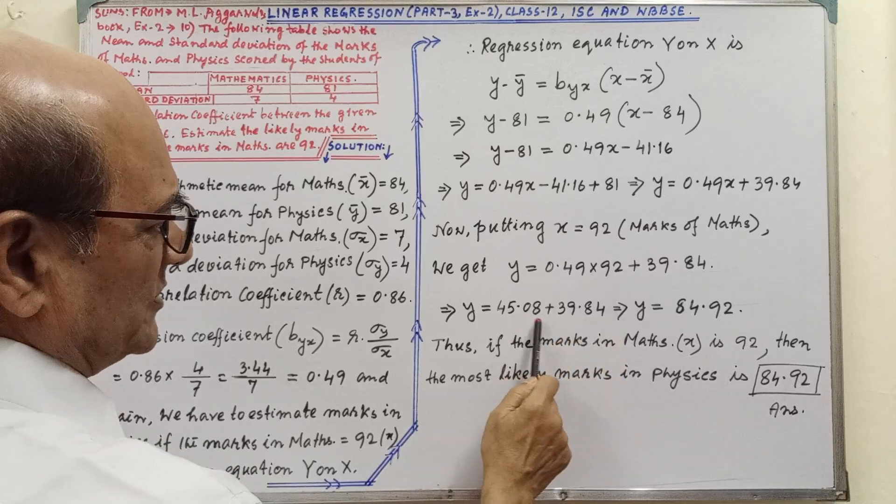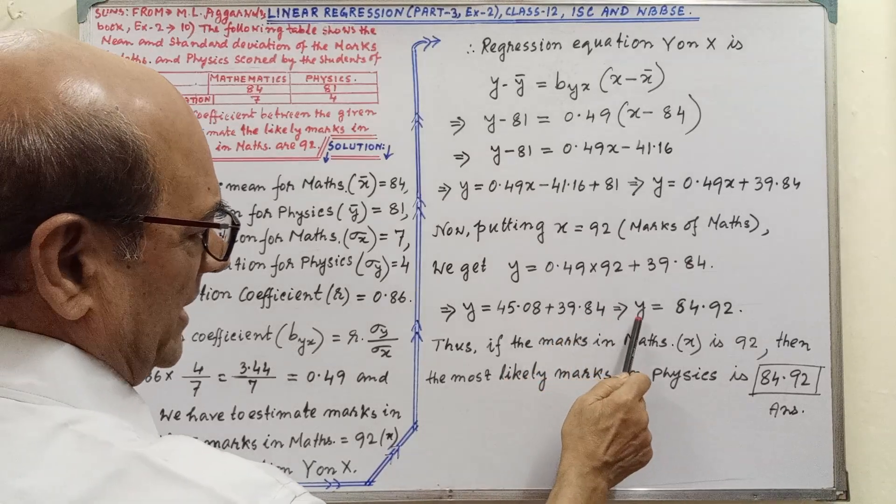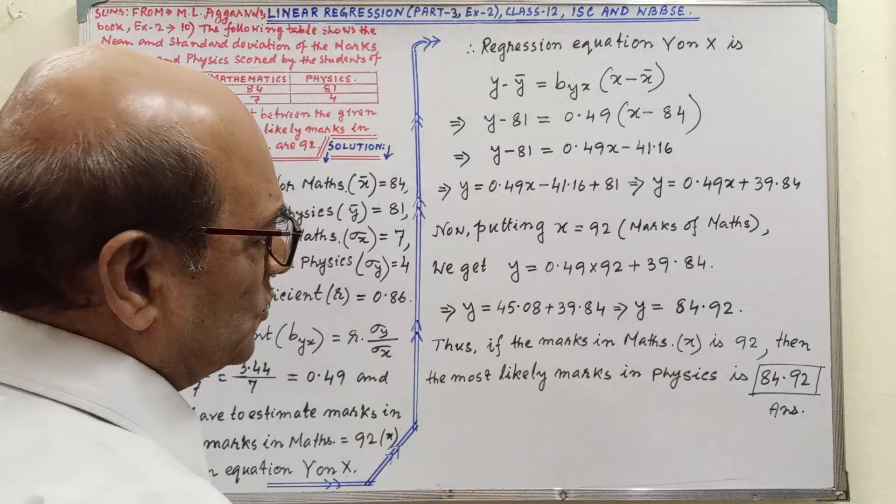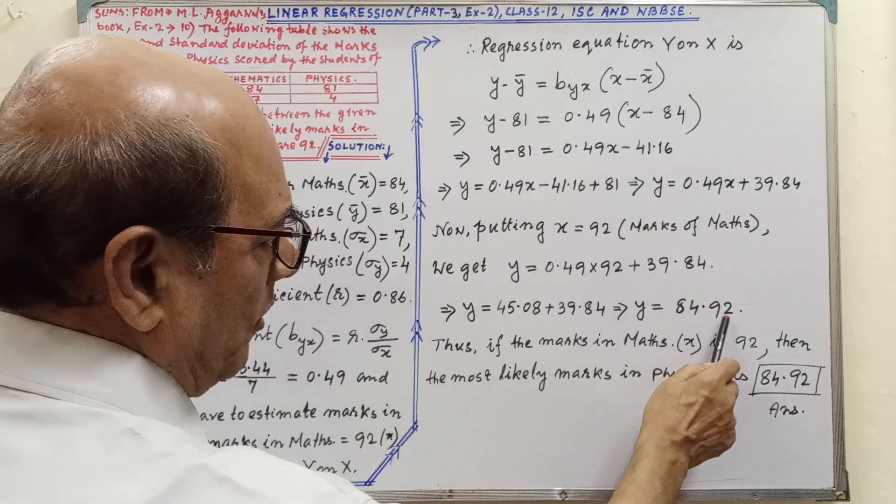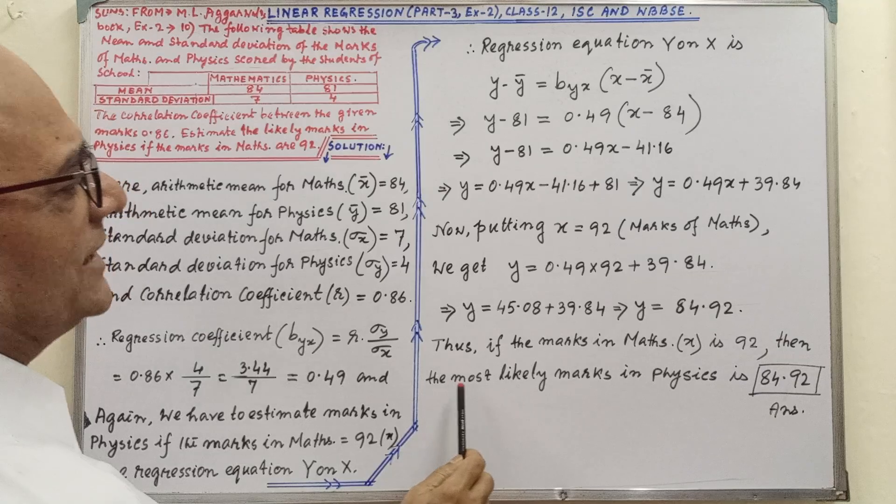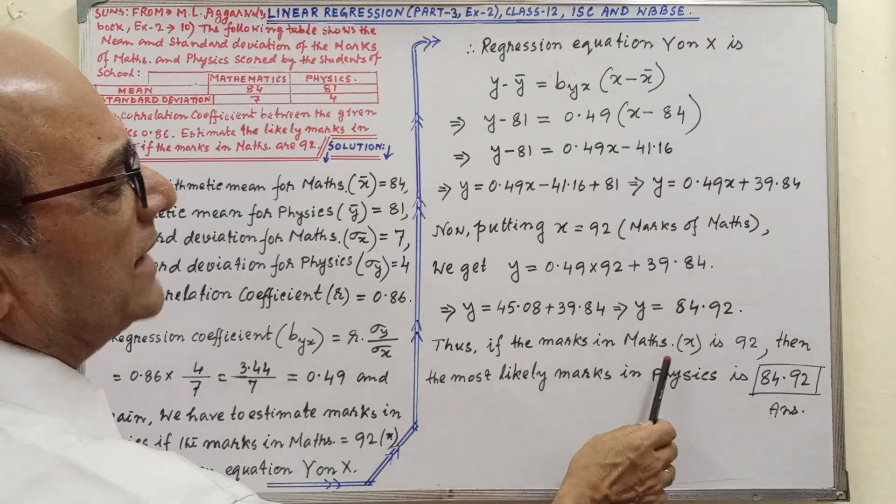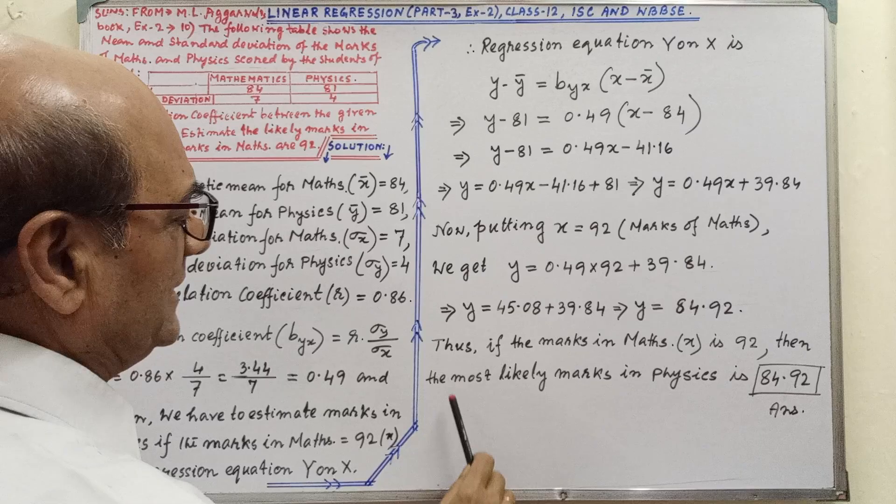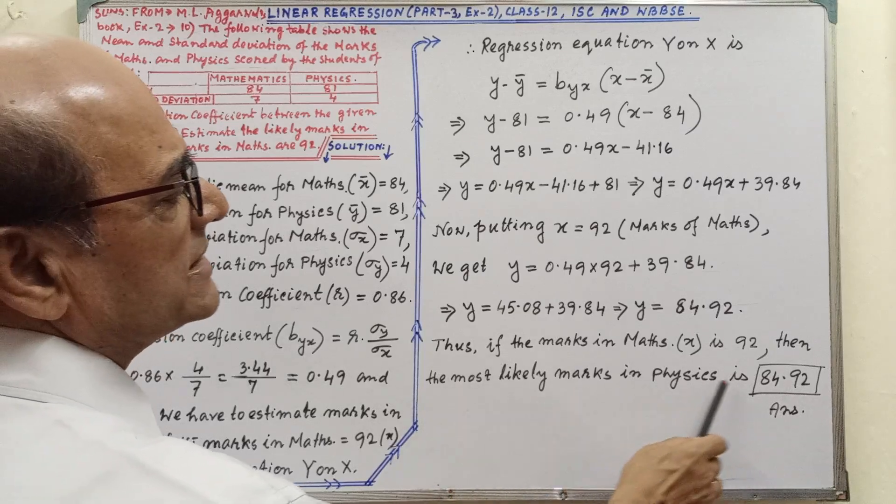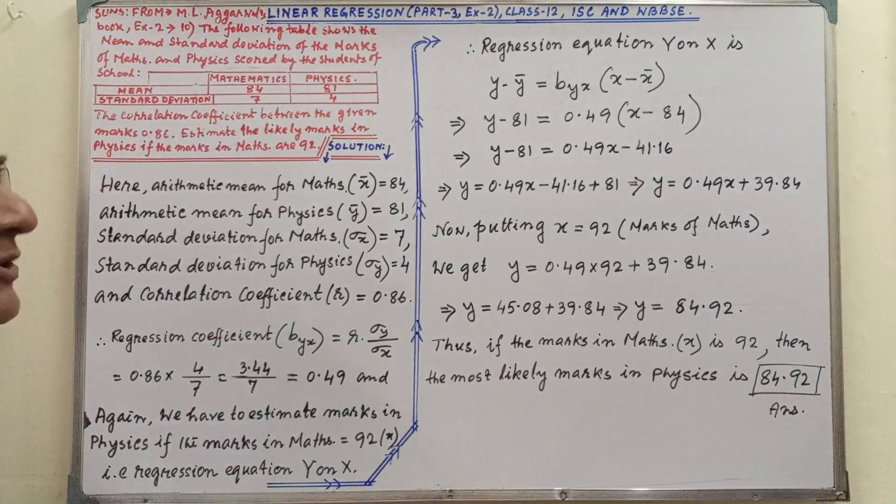After putting, then we have to simplify. Very simple simplification. From this we are getting y equals 84.92. Thus, if the marks in maths, that is x, is 92, then the most likely marks in physics is 84.92.